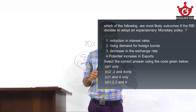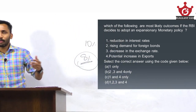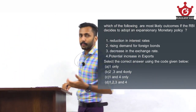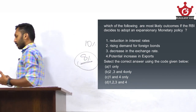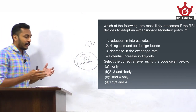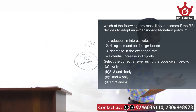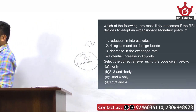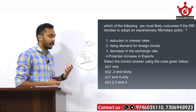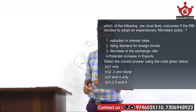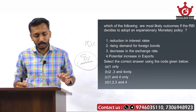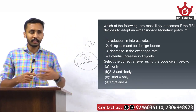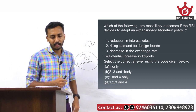If any commodity is available in large numbers, it will automatically reduce its demand. Similarly, if currency is available in large numbers, the demand for currency will automatically reduce, so it will reduce the exchange rate — the currency will depreciate. So decrease in exchange rate is a correct outcome.